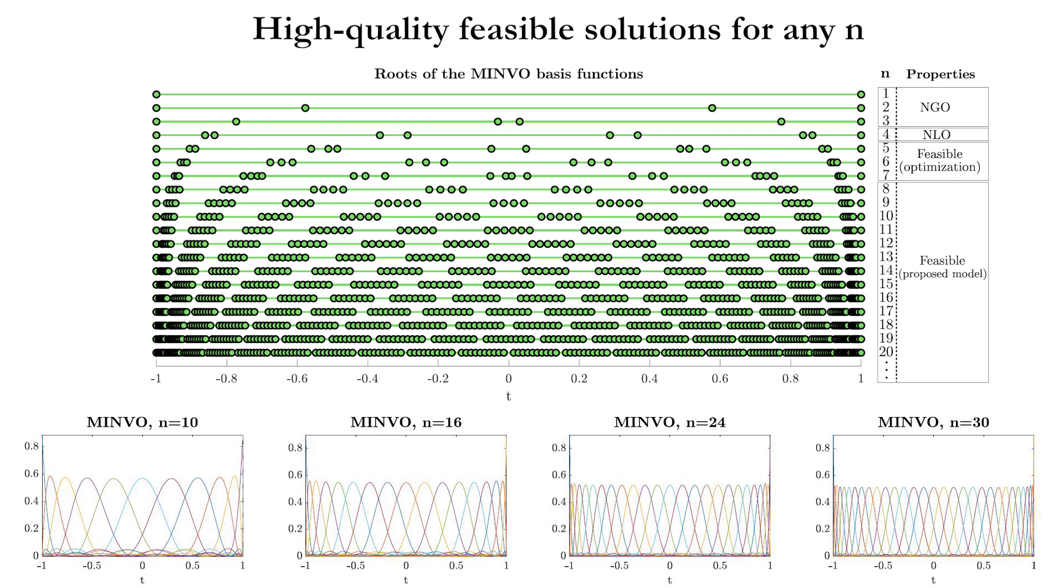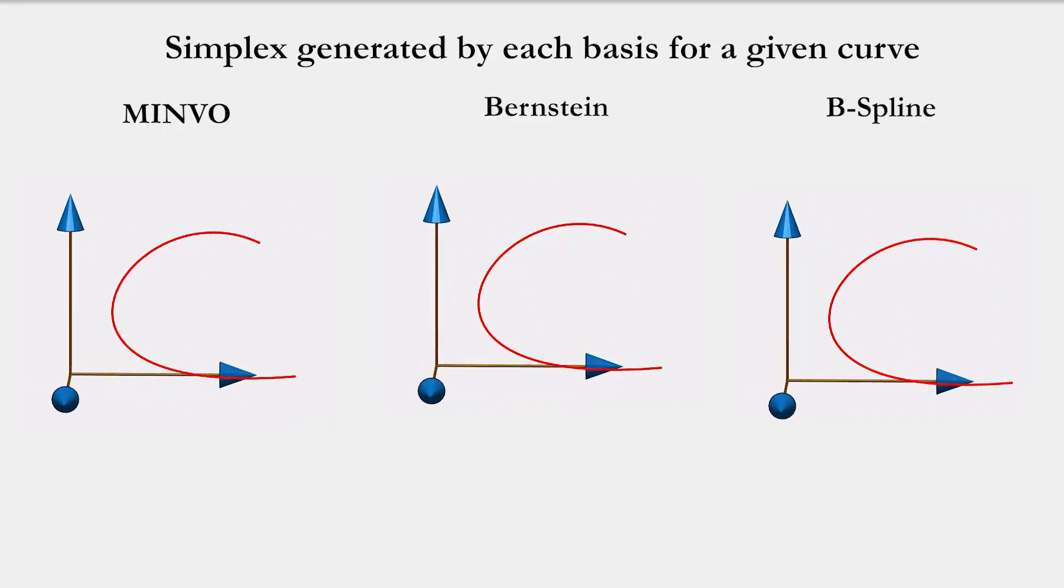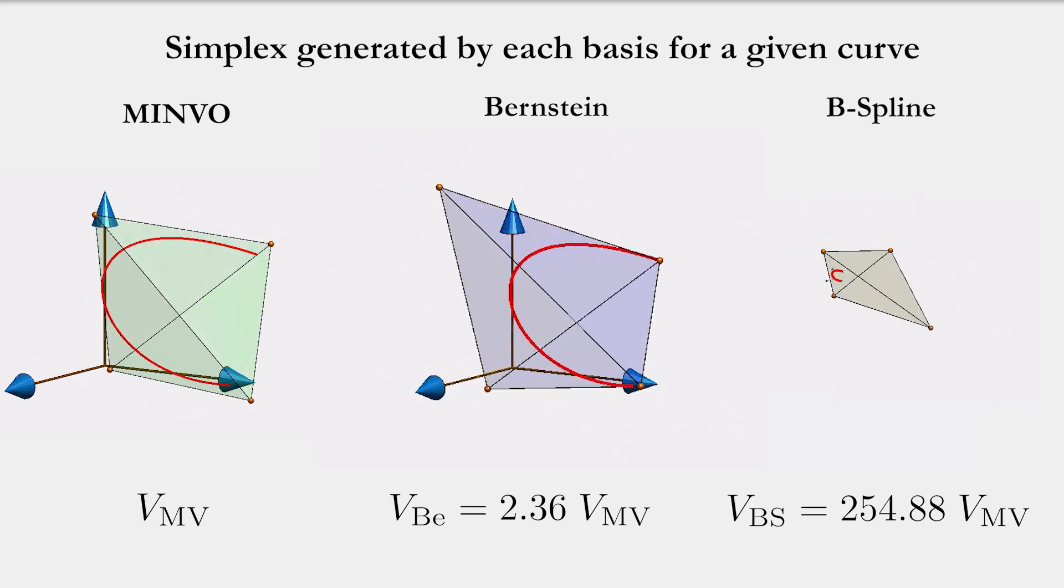Let us see now how these results compare to other bases. For this given polynomial curve, the simplex obtained for each of the bases is this one. The Minvo basis is able to generate the smallest possible simplex.